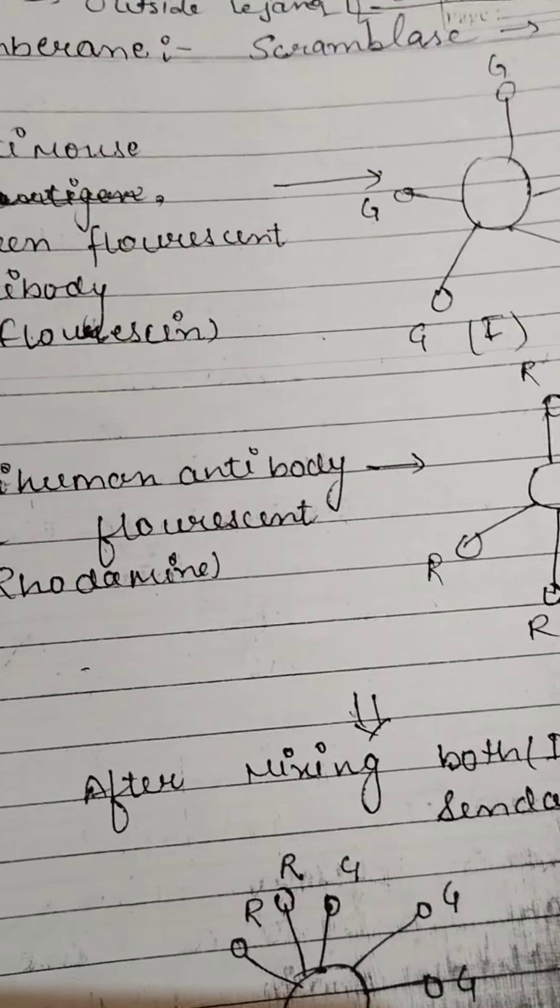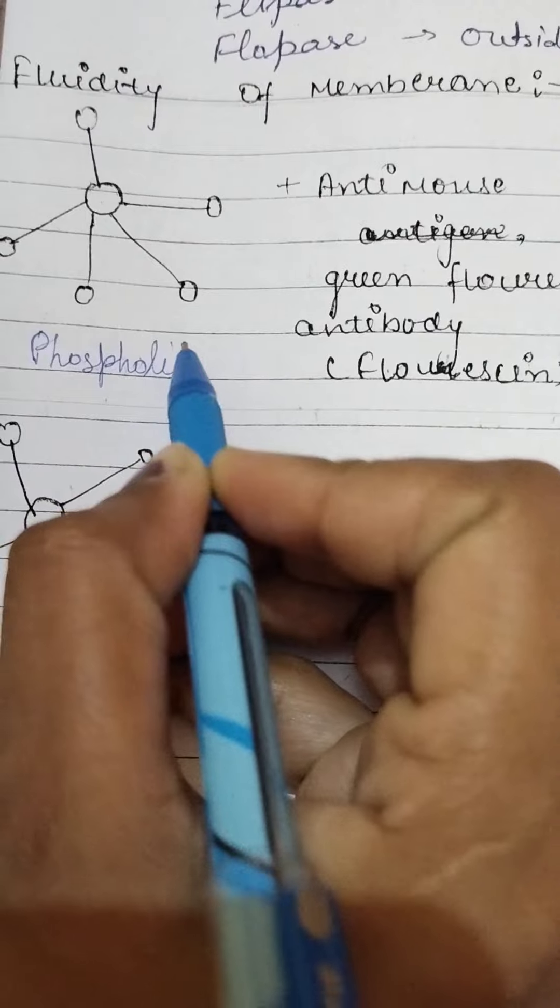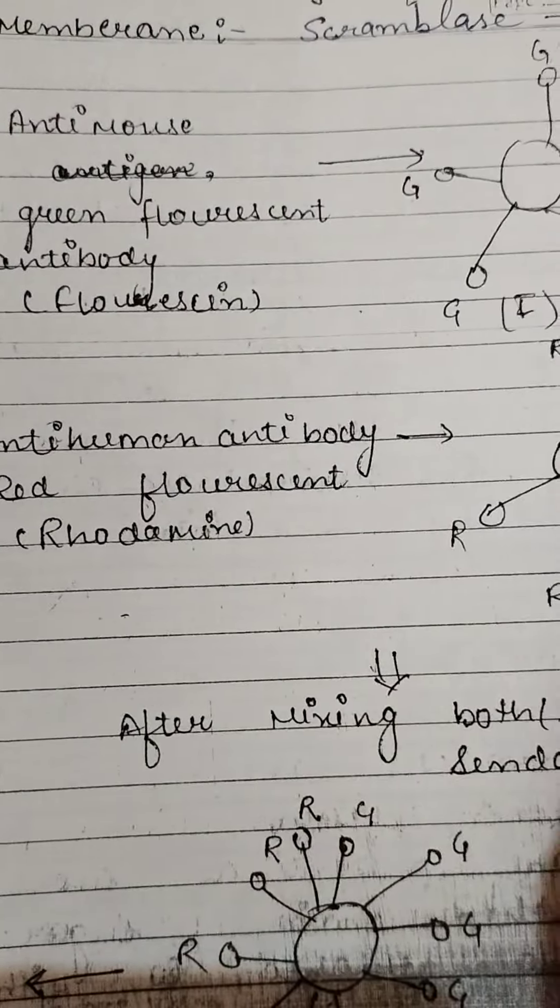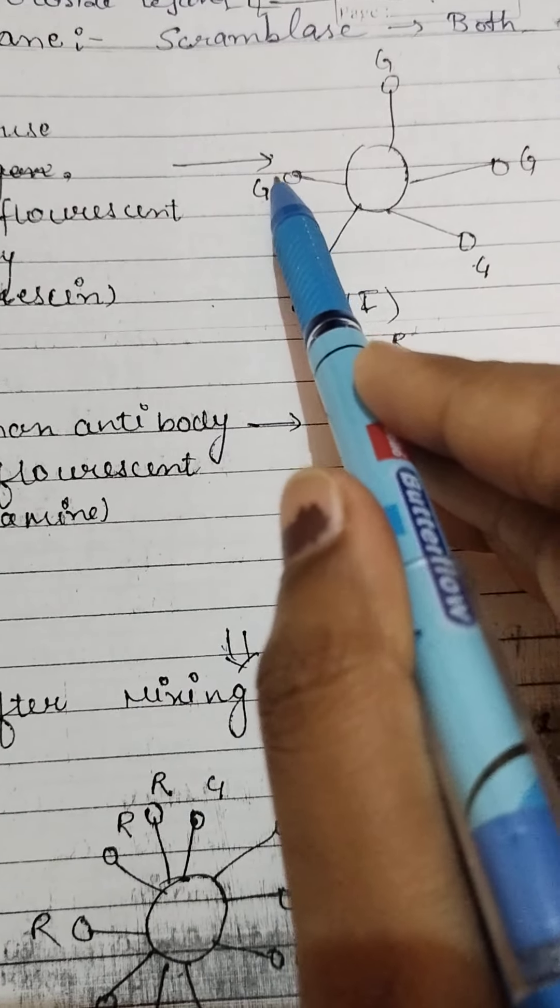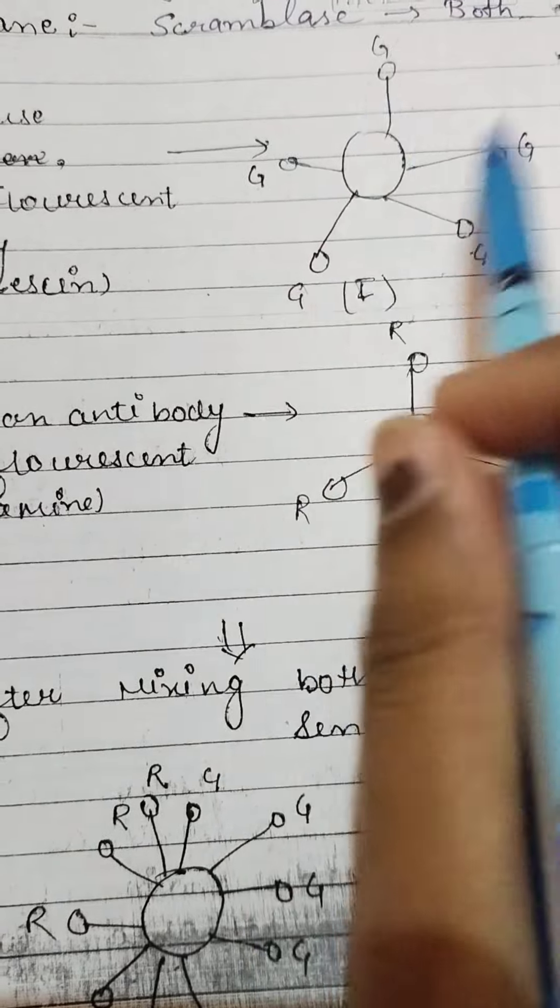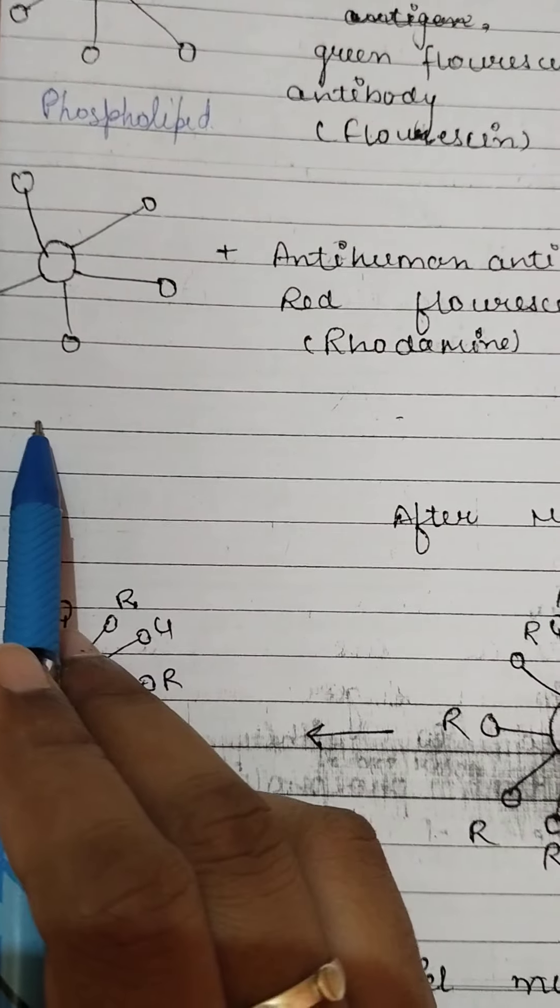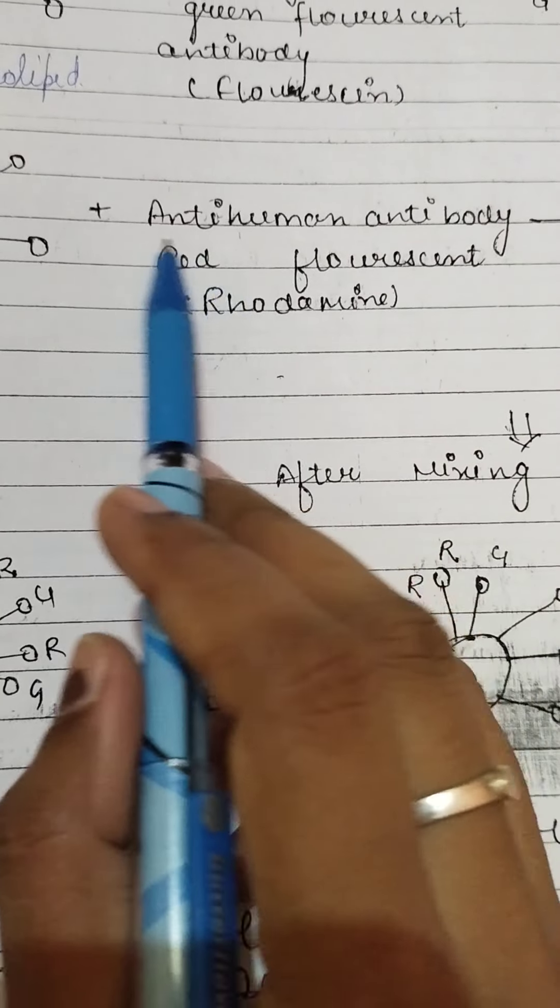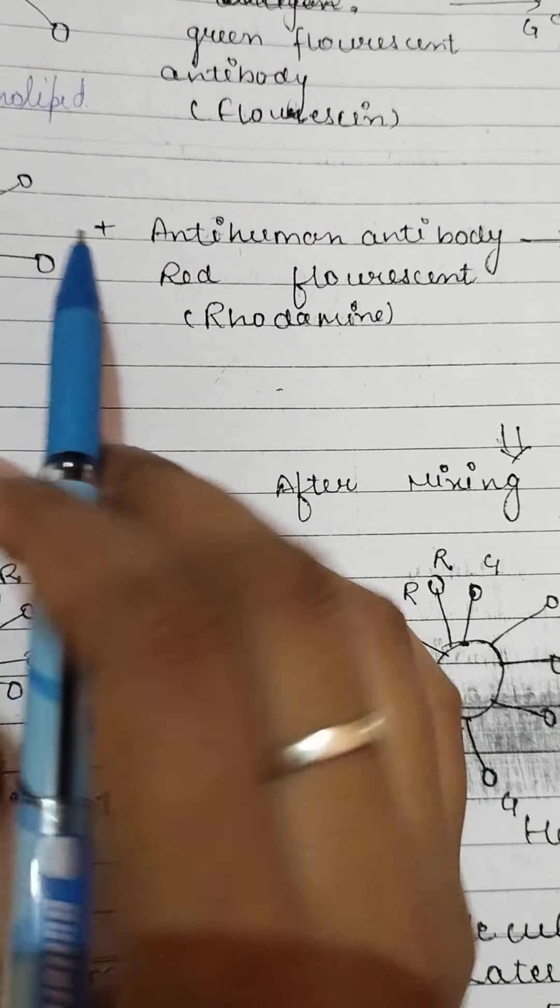When you look at the phospholipid layer, here are phospholipids. You have done the green dye. You have the same phospholipids, and what you have done is human antibody which is the red fluorescence, that is rhodamine.